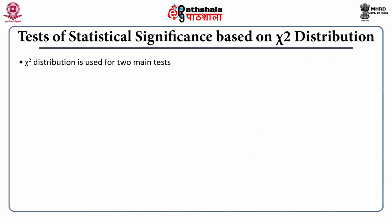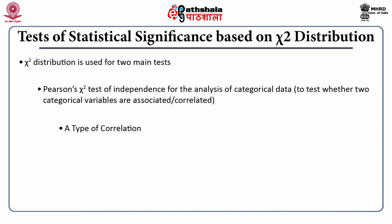There are two types of tests based upon the chi-square distribution. The first is called Pearson's chi-square test of independence of two categorical variables — to test whether two categorical variables are associated or correlated. It is a kind of correlation where there is no hypothesis or model to test upon, simply two variables, and we are looking at whether these two variables are co-varying.